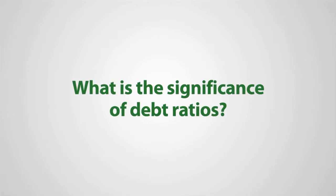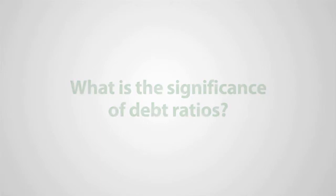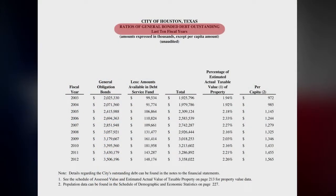Debt ratios are intended to help give the reader a better understanding of the overall debt capacity of the government. They're also useful for helping to assess the risk that the government may be exposed to given its current level of debt, and its creditors. The debt ratios also are useful to help relate the amount of debt that a government may be carrying to taxpayers in a more personal way.